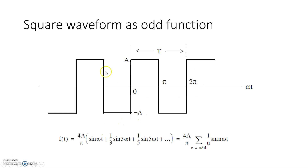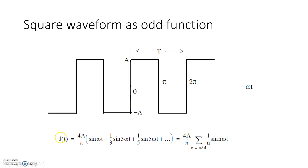If you represent this square wave using the Fourier series in terms of sine and cosine, you get the expression: f(t) = (4a/π) * Σ (1/n) * sin(n*ω*t), where n takes only odd values: 1, 3, 5, 7, 9, ... up to infinity.